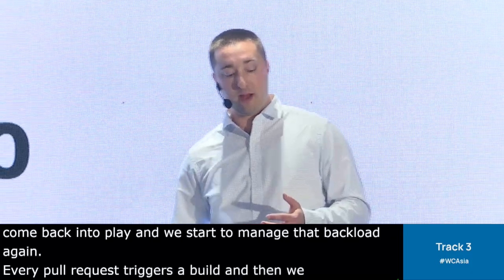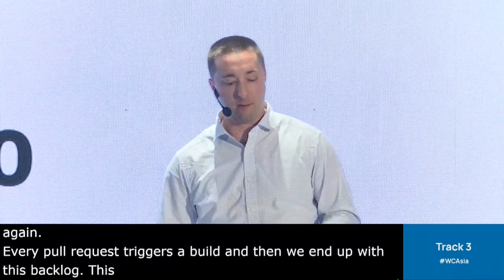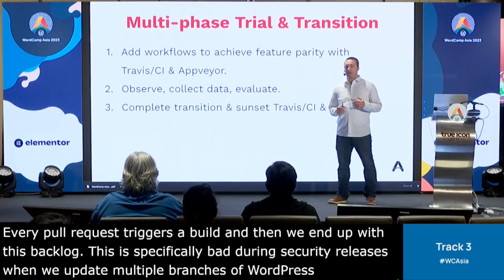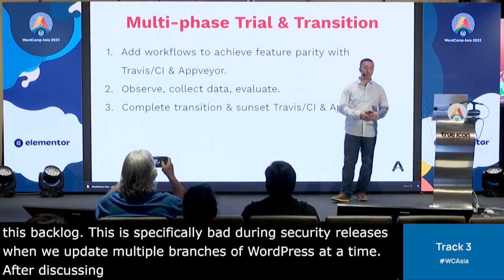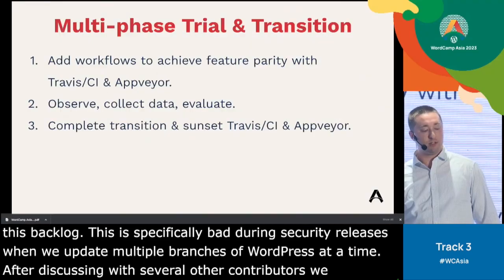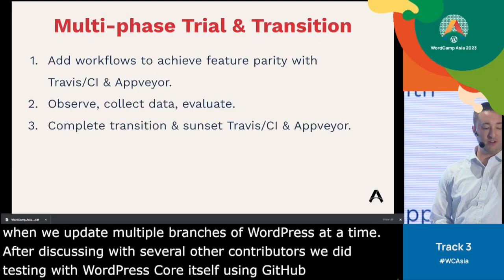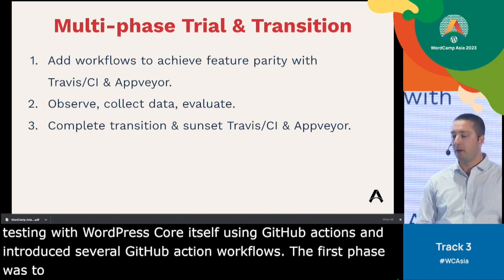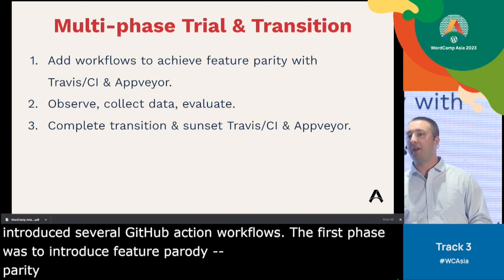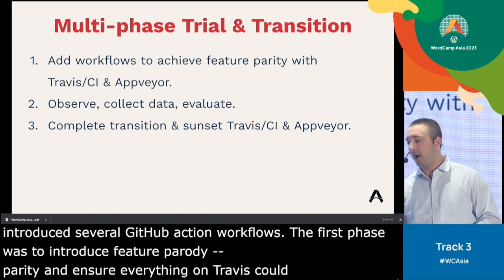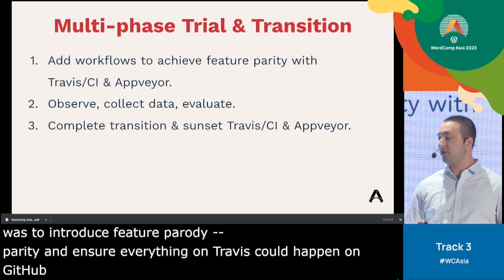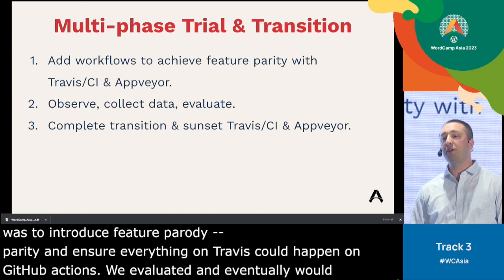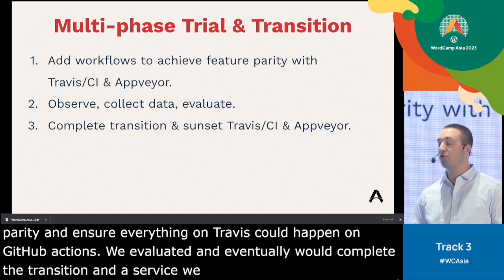After discussing with several other contributors, we decided to do some testing with WordPress Core using GitHub Actions. We introduced several GitHub Action workflows, and our first phase was to introduce feature parity — ensure that everything happening on Travis we could do on GitHub Actions in a similar way. We planned to observe this for a while, collect some data, and then evaluate whether this was going to be a good tool for us to use, and eventually complete the transition and sunset our use of Travis and AppVeyor.